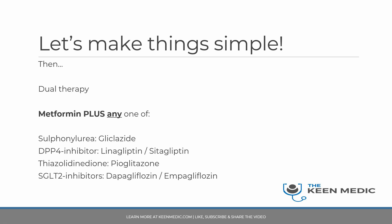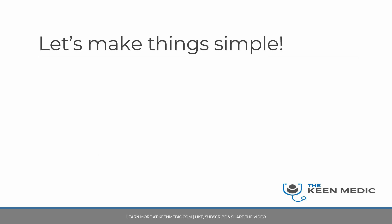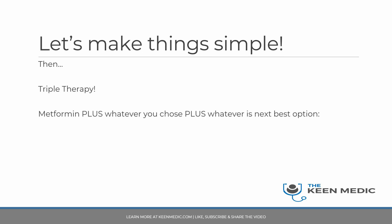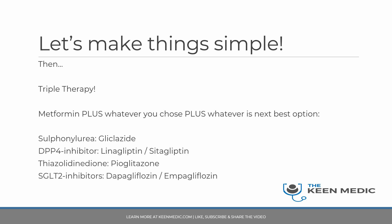For dual therapy, you give metformin plus any one of the following: sulfonylureas like gliclazide (the most commonly used), DPP-4 inhibitors like linagliptin or sitagliptin, thiazolidinediones like pioglitazone (the most commonly used), or the newer SGLT2 inhibitors like dapagliflozin or empagliflozin. These are the key agents you must remember. If HbA1c is still not in target, you move on to triple therapy — metformin plus whichever you chose before plus another agent from the same group.